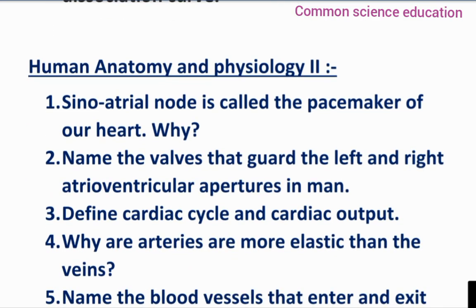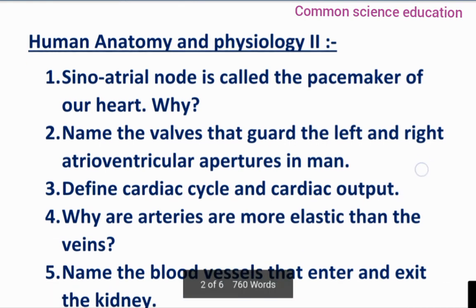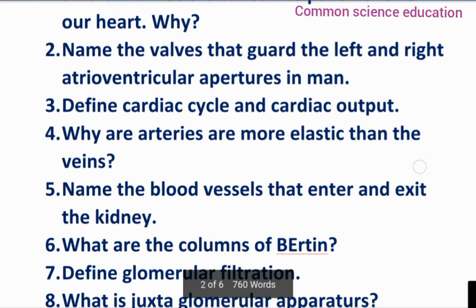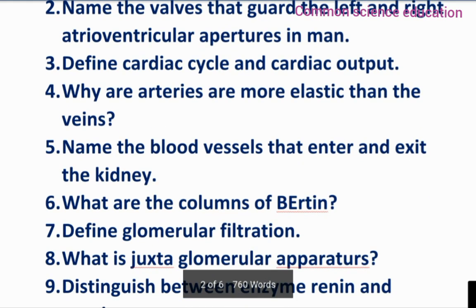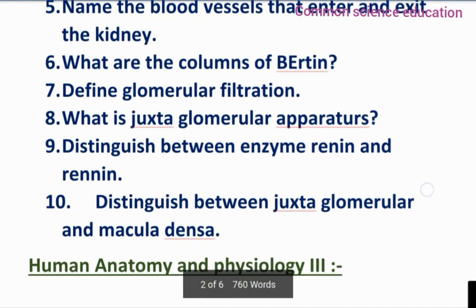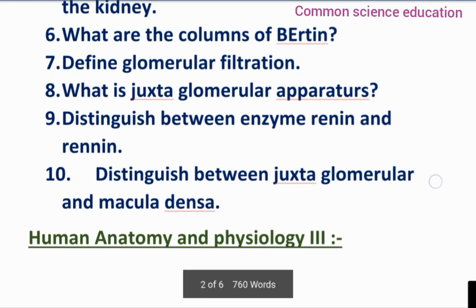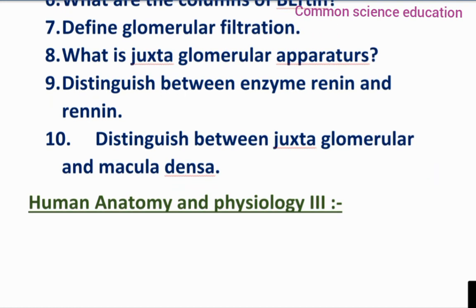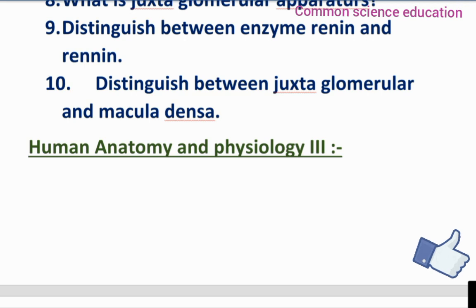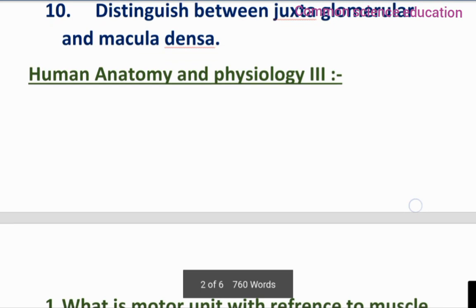Next is the second unit. Questions include: What is the juxtaglomerular apparatus and macula densa?